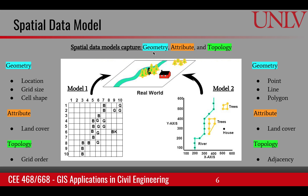Geometry captures the location of the data. Attribute captures the characteristics of that data — for example, its name and other properties that define a particular feature on the ground. Topology tells us about the structure of the space: whether things are adjacent to each other or whether one thing is contained within another.